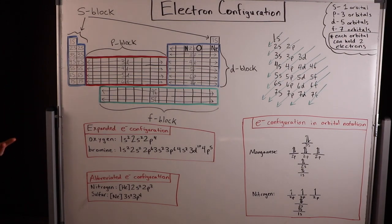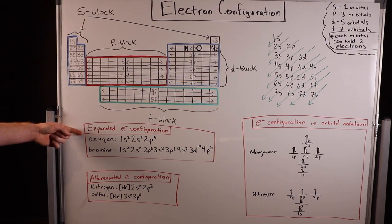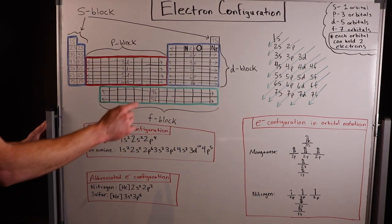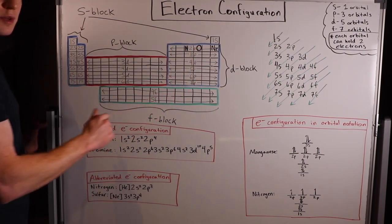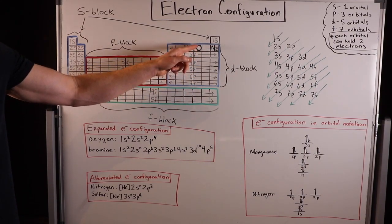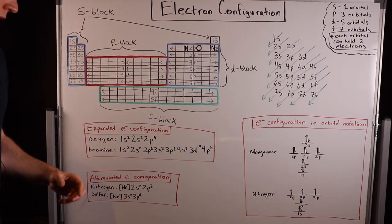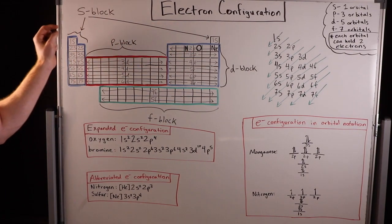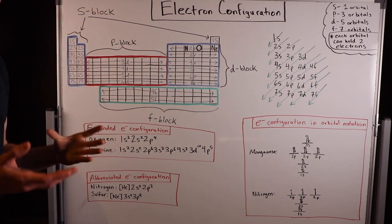The most common way you will see electron configurations written is in the expanded electron configuration form. It's very easy to do this as long as you have a periodic table. I've written out the electron configurations for oxygen and bromine. For oxygen, I wrote in, oxygen is right here in group 6 at the top, in the second row. To write its electron configuration, we simply read the periodic table from left to right, row by row, just like you would read a book.